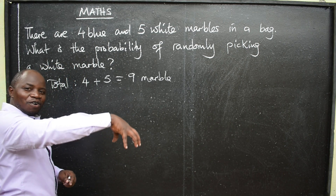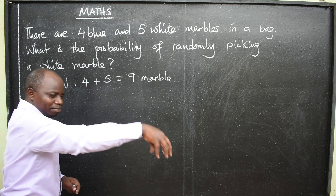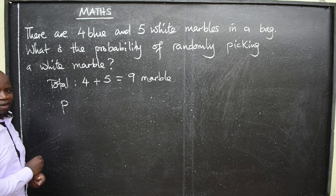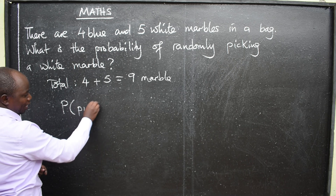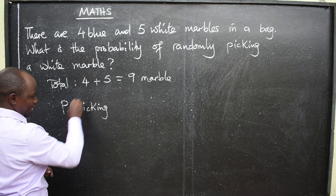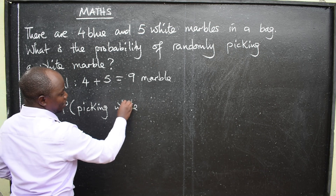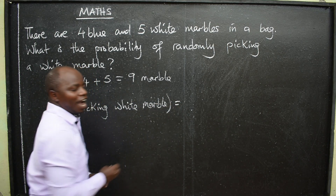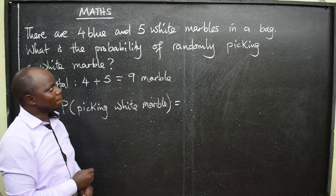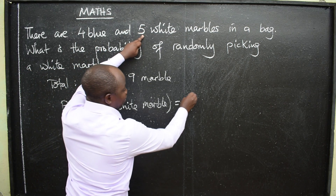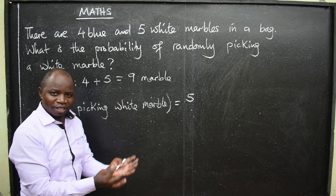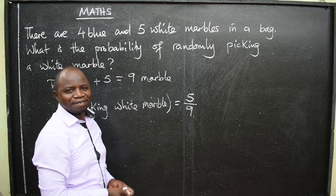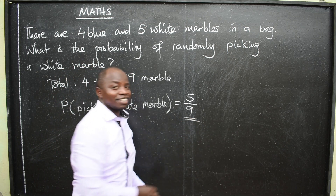So, the chance, or the probability of you at random picking a white marble, will be: probability of picking a white marble equals — how many white marbles are there? There are five. Out of the total in the bag, which is nine. So that is the probability — five over nine. Just like that.